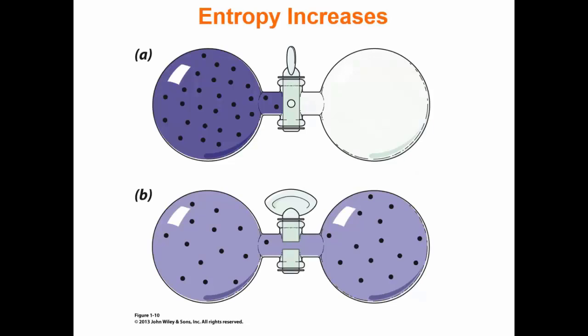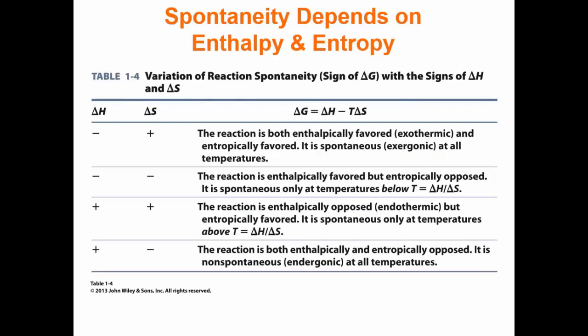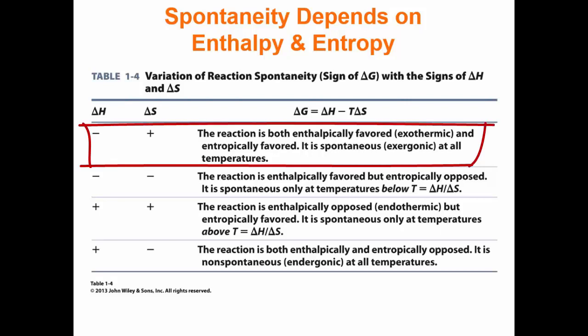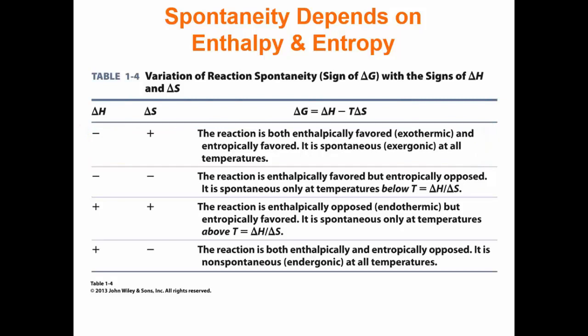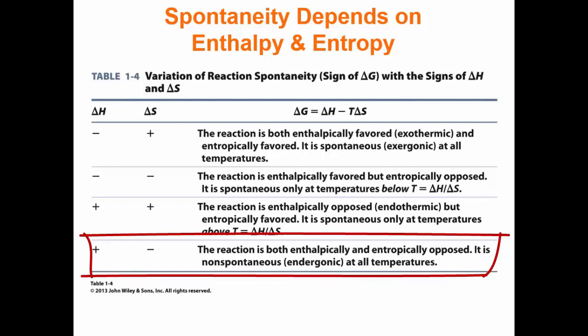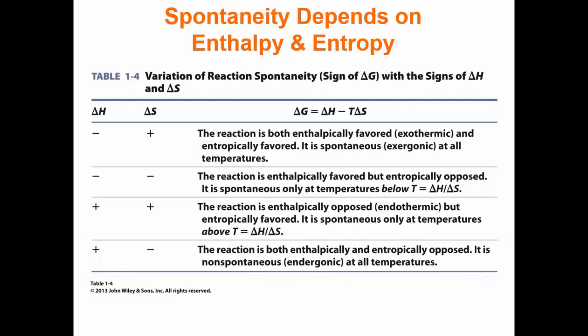The total change in free energy of a system is also dependent on another state function, entropy, defined as the degree of randomness of a system. Under conditions of constant volume and constant pressure, an increase in entropy is favorable, while a decrease in overall entropy is unfavorable. If a reaction is both exothermic and increases in entropy, the reaction is always favorable and spontaneous because delta G is always negative. Conversely, if a reaction is endothermic and decreases in entropy, the reaction is always non-spontaneous because delta G is always positive.